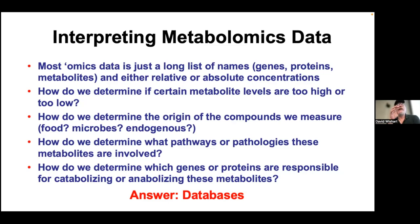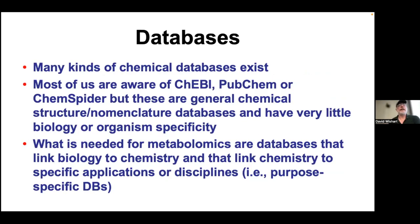If we have unusually high, low, or strange metabolites, what pathways are those associated with? What pathologies or diseases are they involved with? We also have to remember that metabolites are usually transformed, catabolized, absorbed, processed, and bound to proteins — and proteins are coded by genes. So what are the genes and proteins responsible for producing, catabolizing, or modifying these metabolites? That's what connects metabolomics to genomics and proteomics. The answer to all these questions really lies in databases.